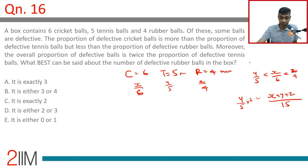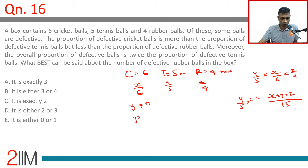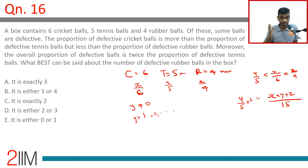y can only go from 0 to 5, x from 0 to 6, z from 0 to 4. Since y is not 0 (from the equation), and y cannot be 5 because 5/5 = 1 would mean everything is defective, leaving no room for x and z to be strictly greater.